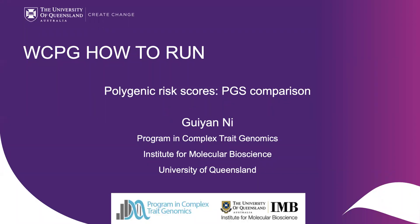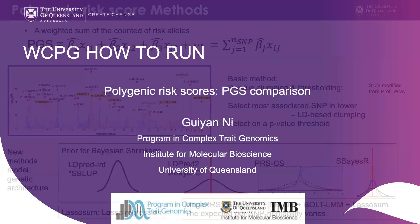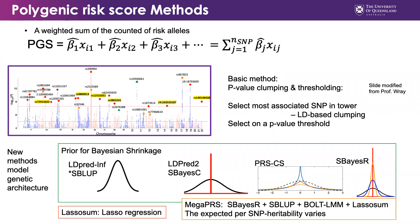Welcome. The topic of this video is how to run polygenic risk score comparison. Until now, we have already watched individual talks on PRS-CS, LDpred2, SPSR, and other methods. I believe you all have a good understanding about polygenic score and each of those methods. This slide is just to set up the scene to make sure we are all on the same page.